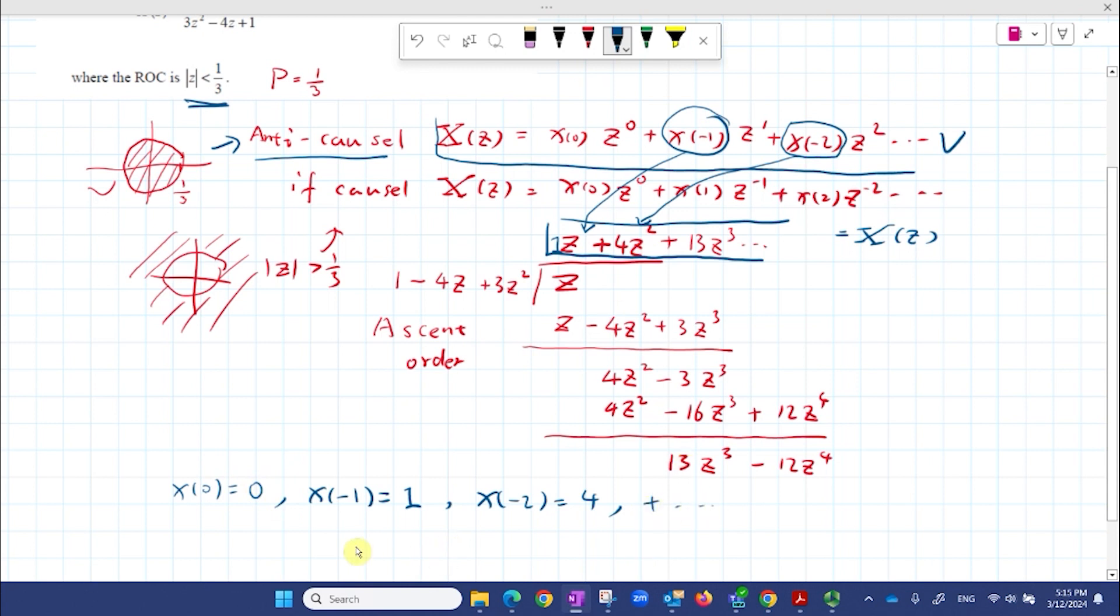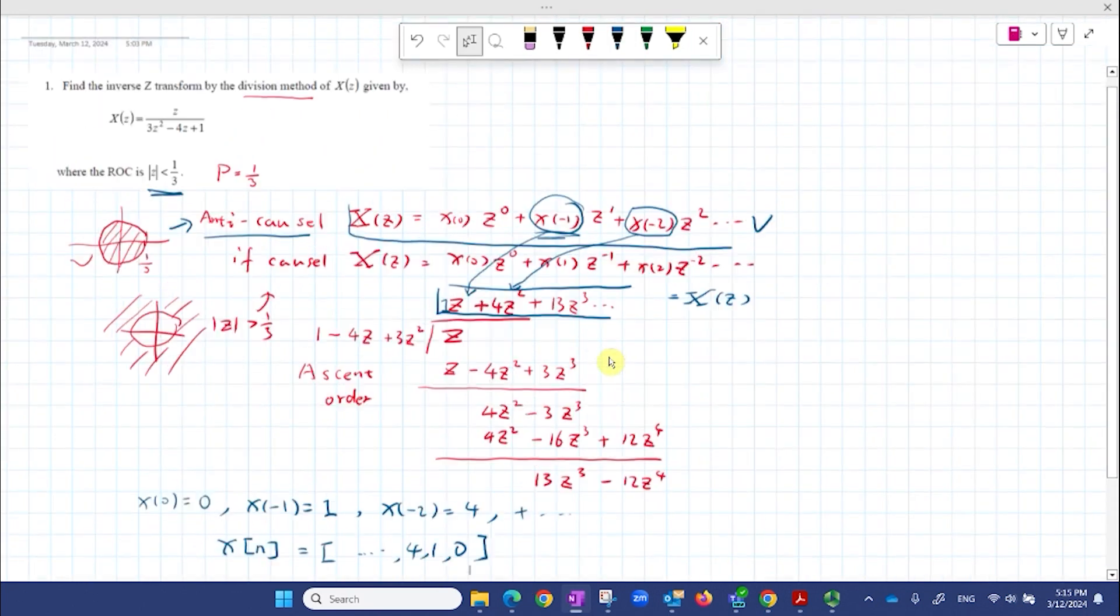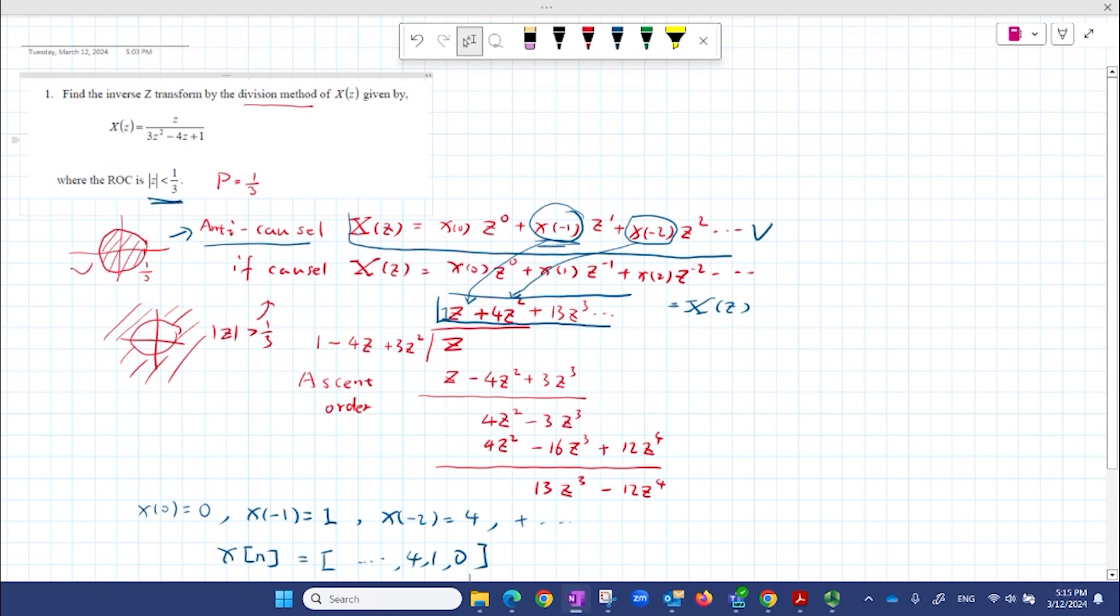Okay, so if you want to write this one, the lower case x(n), which is the coefficient here, is actually equal to... we start from 0, 0 and 1. You go backwards because it's a negative sequence. Okay, so that's something for the first question. We'll shrink it a little bit so we can see the whole picture here. Okay.